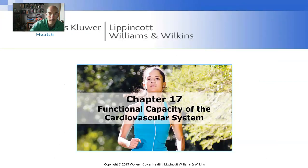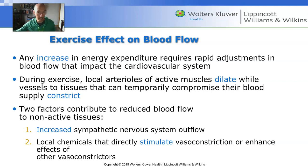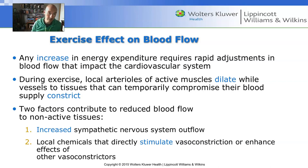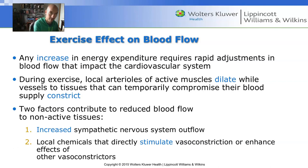During exercise, areas that need blood get increased blood flow — muscles and skin see increased flow. Areas that don't need blood during activity, such as the kidneys, liver, and stomach, see reduced blood flow. When resting, it flips: more blood flow to kidneys and liver, less to muscles and skin. When you're running for your life, you're not worried about digestion or going to the bathroom.